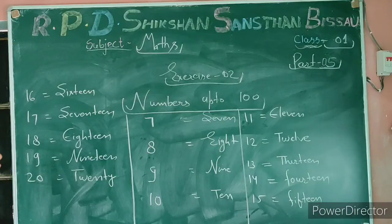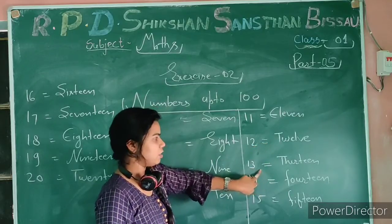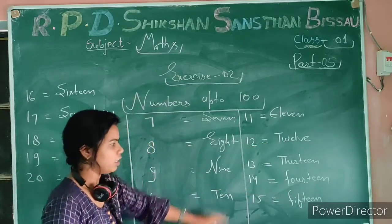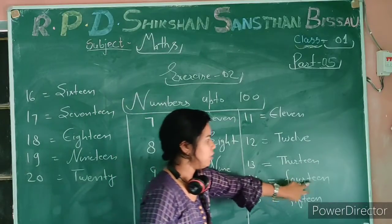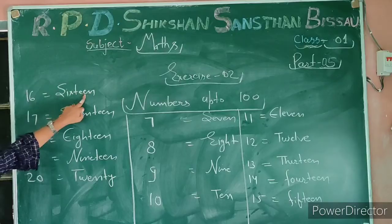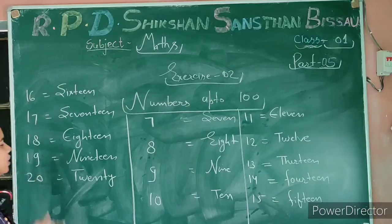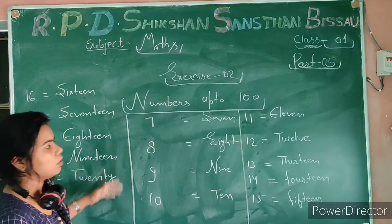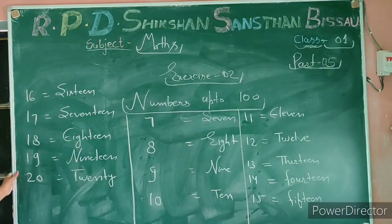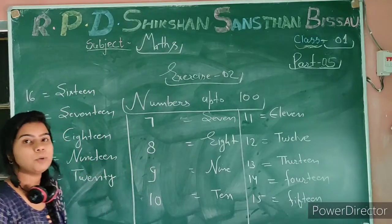Look carefully, students — 11 is called ELEVEN, 12 is called TWELVE, and this makes THIRTEEN. Then 14, 15, 16 — some numbers are the same pattern but some are not the same. Learn carefully; it will be easy if you work hard at home and practice writing in your books.